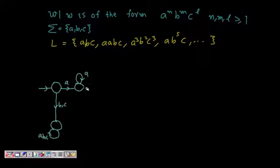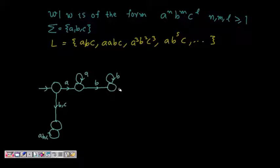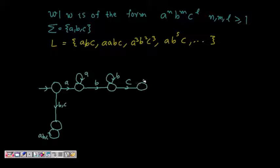Next, let's think about 'b'. After getting at least one 'a' and then as many a's as you want, I should get one 'b'. Once I get one 'b', I can get as many more b's as I want. Then I go to the next state where I want at least one 'c', and then I can get as many c's as I want.